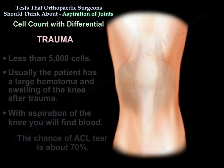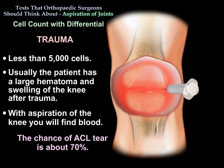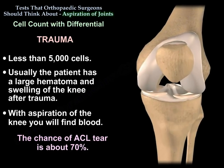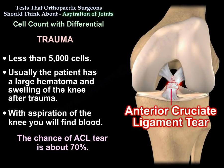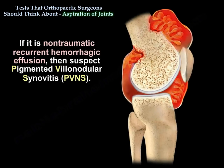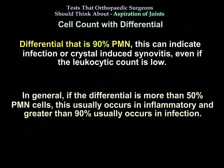Trauma: less than 5,000 cells usually. If the patient has a large hematoma and swelling of the knee after trauma and you aspirate the knee and find blood, the chance of ACL tear is about 70 percent. If it is non-traumatic recurrent hemorrhagic effusion, then suspect pigmented villonodular synovitis.